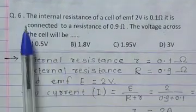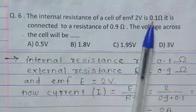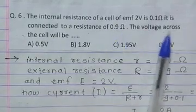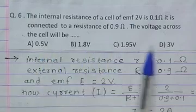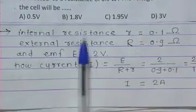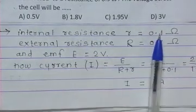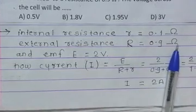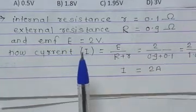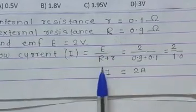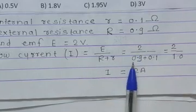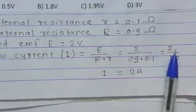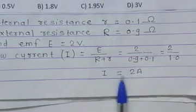Question number 6: The internal resistance of a cell of EMF 2 volt is 0.1 ohm. It is connected to a resistance of 0.9 ohm. What is the voltage across the cell? Internal resistance r is 0.1 ohm, external resistance R is 0.9 ohm. Current I equals E upon r plus R equals 2 upon 1 equals 2 ampere.